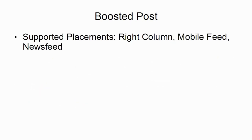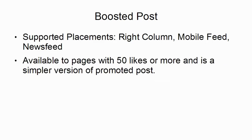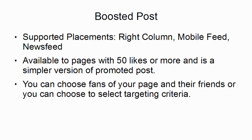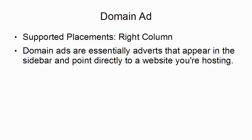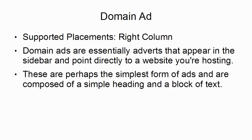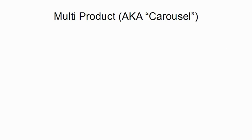Then there's a boosted post, which is slightly different. The supported placements are the right column, mobile feed, and news feed. It's available to pages with 50 likes or more, and it's a simpler version of the promoted post. You choose fans of your page and their friends, or you can choose to select targeting criteria. Then there's a domain ad — the supported placement is in the right column. Domain ads are essentially adverts that appear in the sidebar and point directly to a website that you're hosting, similar to a Google AdSense ad. They are perhaps the simplest form of ads, composed of a simple heading and a block of text.